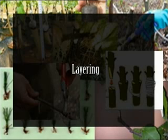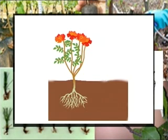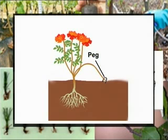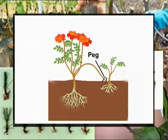Another method is called layering. In layering, a shoot of a parent plant is bent until it can be covered by soil. The tip of the shoot remains above ground, which results in the formation of new roots and eventually a new plant. These plants are then separated.